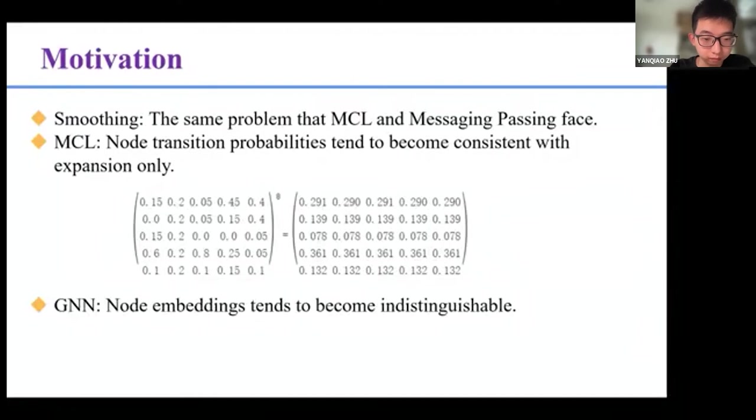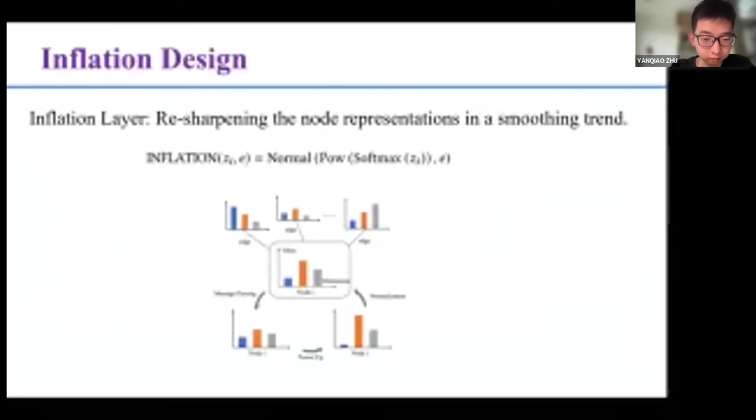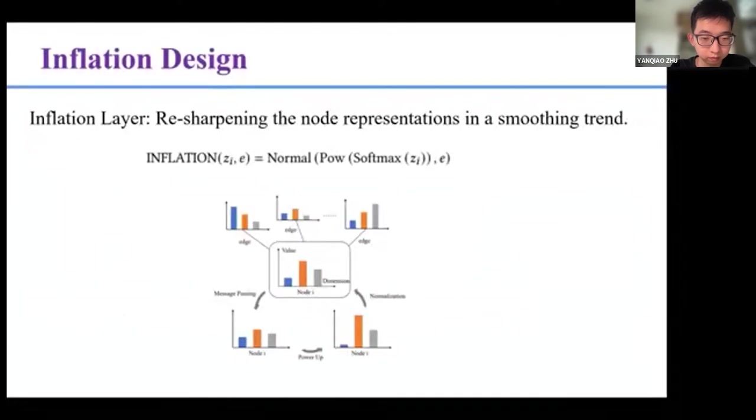The inflation layer acts directly on the node representations between convolutional layers. It aims at resharpening the node representations in a smoothing chain to make them expressive again. Similar to the MCL, the inflation layer takes the power of the representation vector on each node and normalizes the representations.